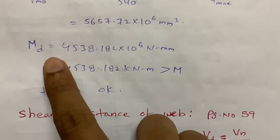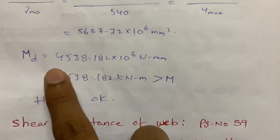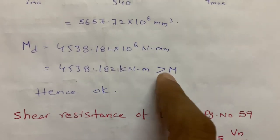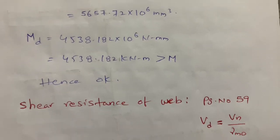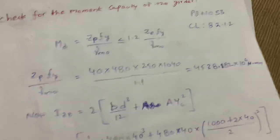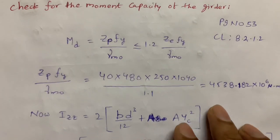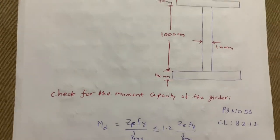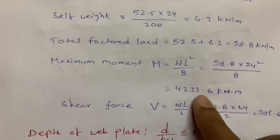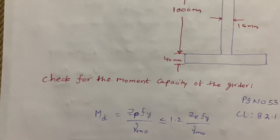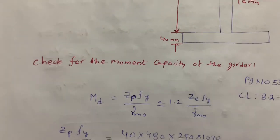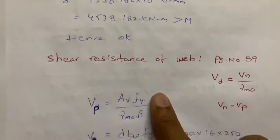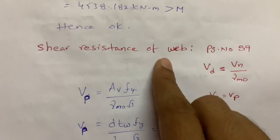After calculation, MD = 4538.182 × 10⁶ N·mm, which is greater than the applied moment of 4233.6 kN·m. Since the moment capacity of the girder exceeds the applied moment, the section is safe in bending.